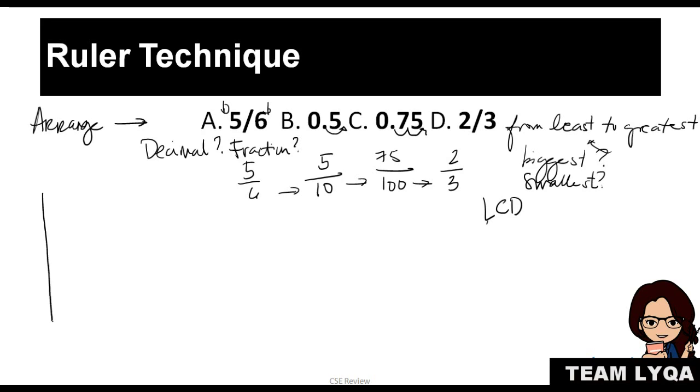The ruler technique goes like this. On your paper, you write ruler. This is our ruler. If this is 0, this is 1 half or 0.5, and this is 1. This would be 3 fourths or 0.75. This would be 1 fourth or 0.25.